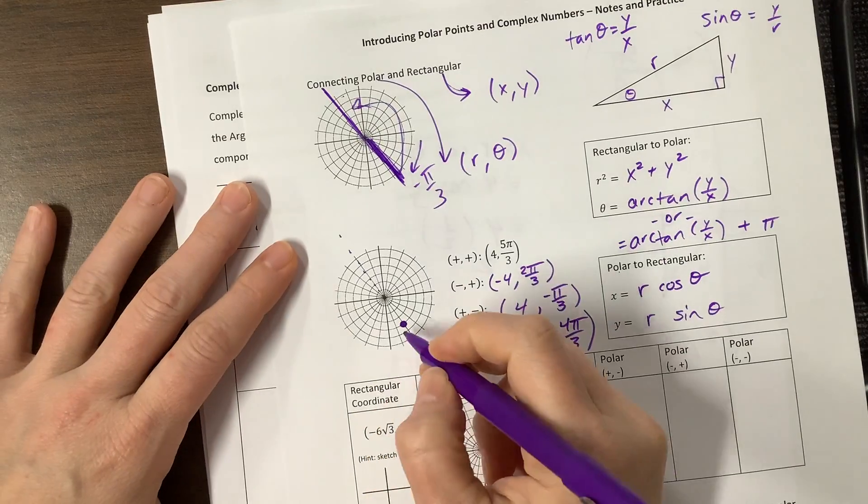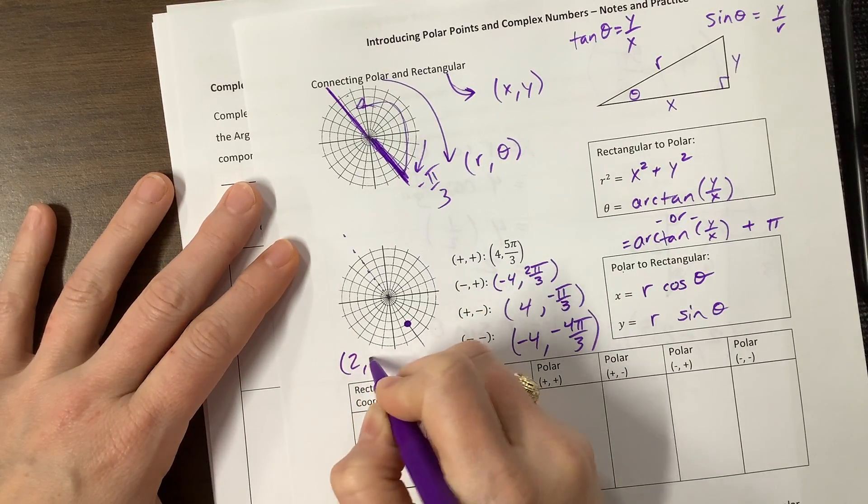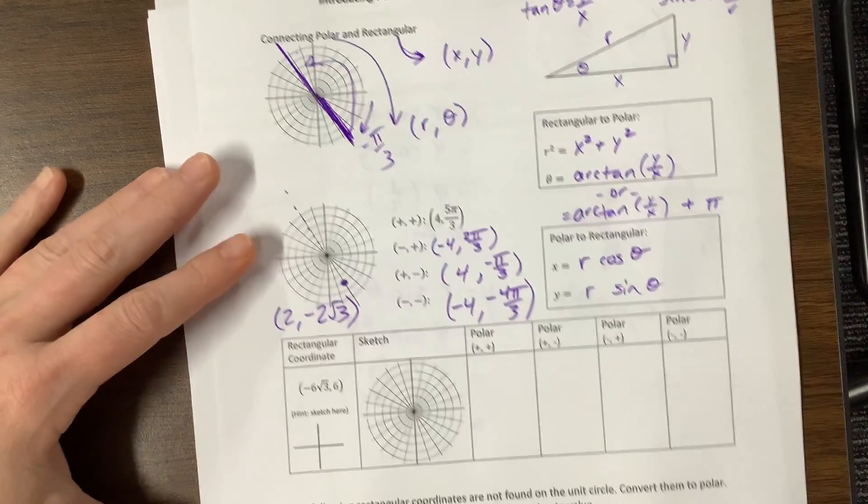Yeah, either way, that gets us there. So, basically, what was I doing? I was saying that the polar coordinates were negative 2√3 for that particular problem. Okay, super.